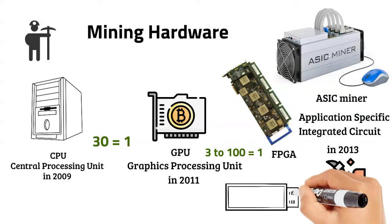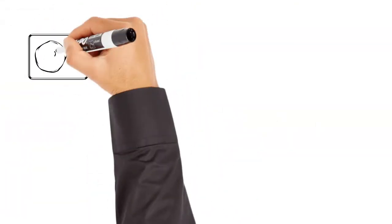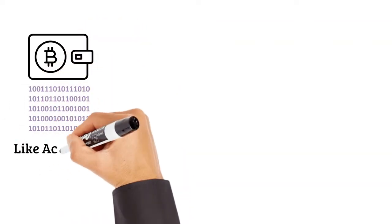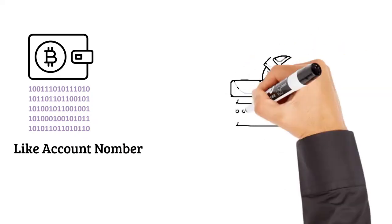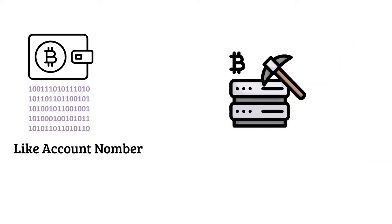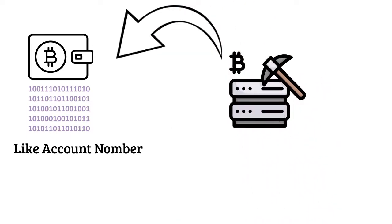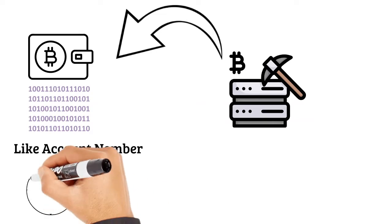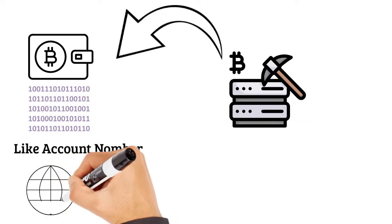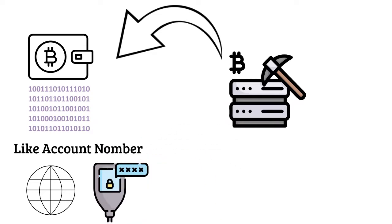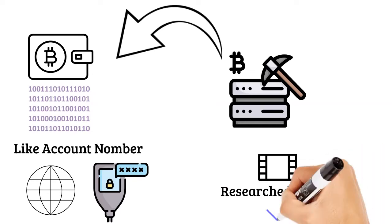Now that you know what miners are, the other thing you are going to need is a wallet. It's essentially like a bank account number for your cryptocurrency, so that whatever service you are using can deposit it to you and you get credit for all the cryptocurrencies you are mining — like when your employer does a direct deposit to your bank account. Wallets can be stored on the internet or in physical hardware. There's a more detailed video about wallets on our channel, so don't miss it.